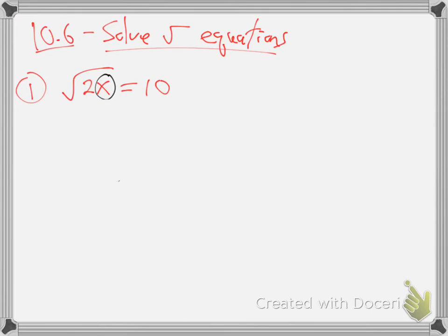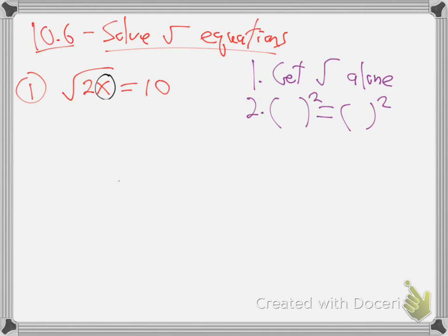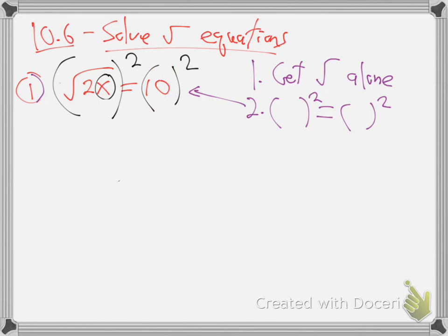How do we do it? Here's the game plan: Step one — get the root alone. Step two — two-power both sides, because the two-power is the opposite of the root. Step one: the root is already alone on this one. Some of the others will need work — like if you had a plus three over here, you'd need to get rid of that first. But this one the root's already alone, so right on to step two: put parentheses, two-power, parentheses, two-power. Why? Because a two-power is the opposite of a root — they undo each other.